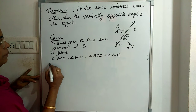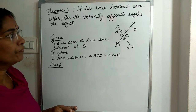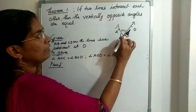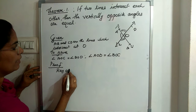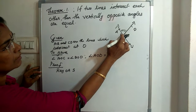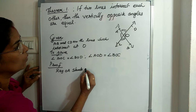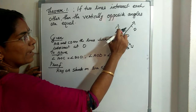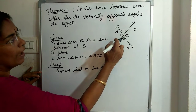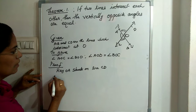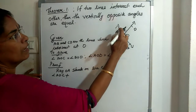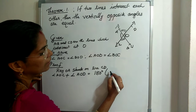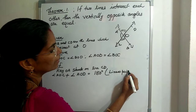Now the third step is the proof. We consider ray OA standing on line CD. Since ray OA stands on line CD, by the linear pair axiom, angle AOC plus angle AOD equals 180 degrees. We label this as equation 1, with the reason being the linear pair axiom.